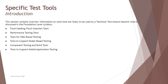We will be talking about six different concepts here: fault seeding or fault injection tools, performance testing tools, tools for web-based testing, tools to support model-based testing, component testing and build tools, and tools that support mobile application testing. In this tutorial we'll cover the first three tools in part one and the other three in the next part.